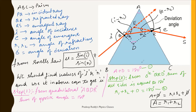We have this prism where PQ is the incident light ray, QR is the refracted light ray, and RS is the emergent light ray. The angle of deviation is delta. A, B, C are the vertices of the prism, and r1 and r2 are the angles of refraction at surface Q and surface R respectively. These are the notations used in this diagram.